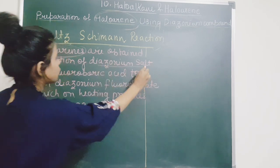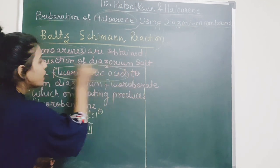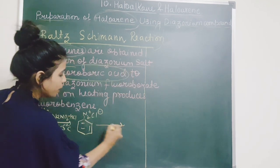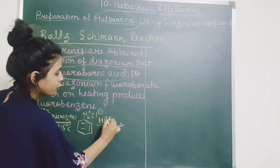This diazonium salt is basically treated with fluoroboric acid. Now what is fluoroboric acid? HBF4.